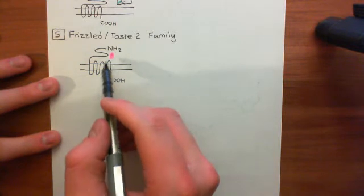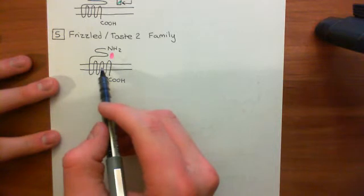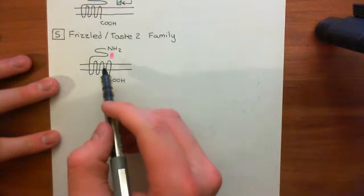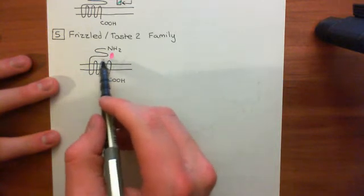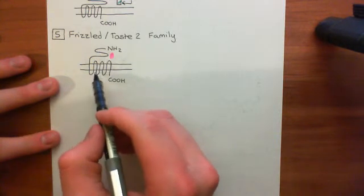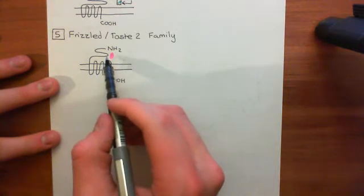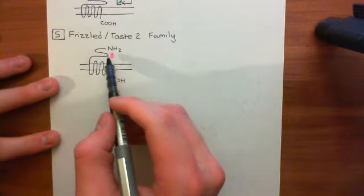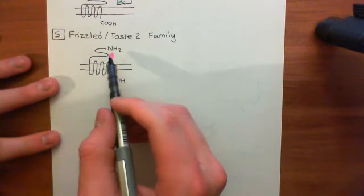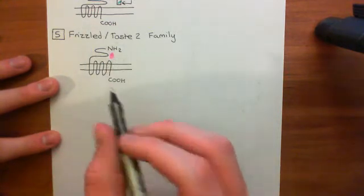These receptors don't fit into the rhodopsin family because they don't bind within the transmembrane domain; they don't fit the secretin family because there's no wedge-binding between the amino terminal domain and TM domain; they lack the venus flytrap domain of the glutamate family; and they don't bind the extracellular matrix like adhesion family receptors. So everything remaining goes into this family.